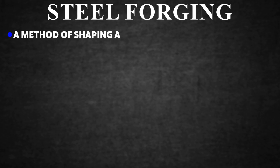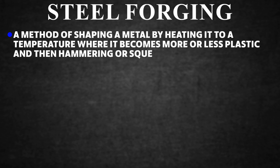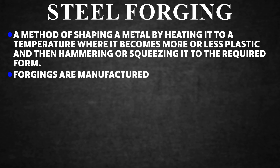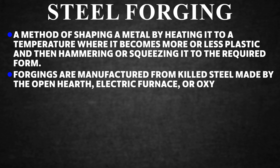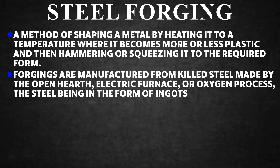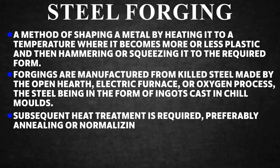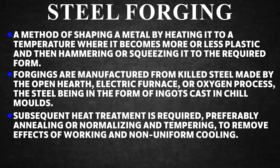Steel Forging. A method of shaping metal by heating it to a temperature where it becomes plastic and then hammering or squeezing it to the required form. Forgings are manufactured from killed steel made by the open hearth, electric furnace, or oxygen process, with the steel in the form of ingots cast in chill moulds. Subsequent heat treatment — preferably annealing or normalizing and tempering — is required to remove effects of working and non-uniform cooling.